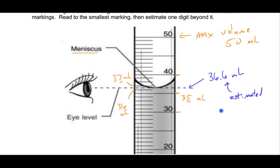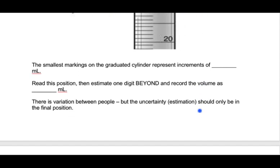I have a little more to say about a 10 milliliter graduated cylinder in a few minutes. Let's start filling in the information — the smallest marks on this graduated cylinder are every one milliliter. It's telling you to go one digit beyond — that's the estimated value. I said this was 36.6 milliliters, and that's kind of how you fill out a report sheet.